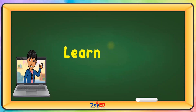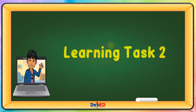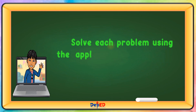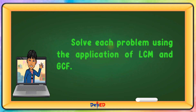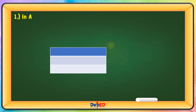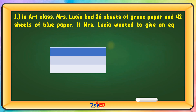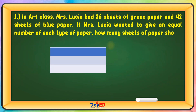Learning Task 2. Solve each problem using the application of LCM and GCF. In art class, Mrs. Lucia had 36 sheets of green paper and 42 sheets of blue paper. If Mrs. Lucia wanted to give an equal number of each type of paper, how many sheets of paper should each pupil get?